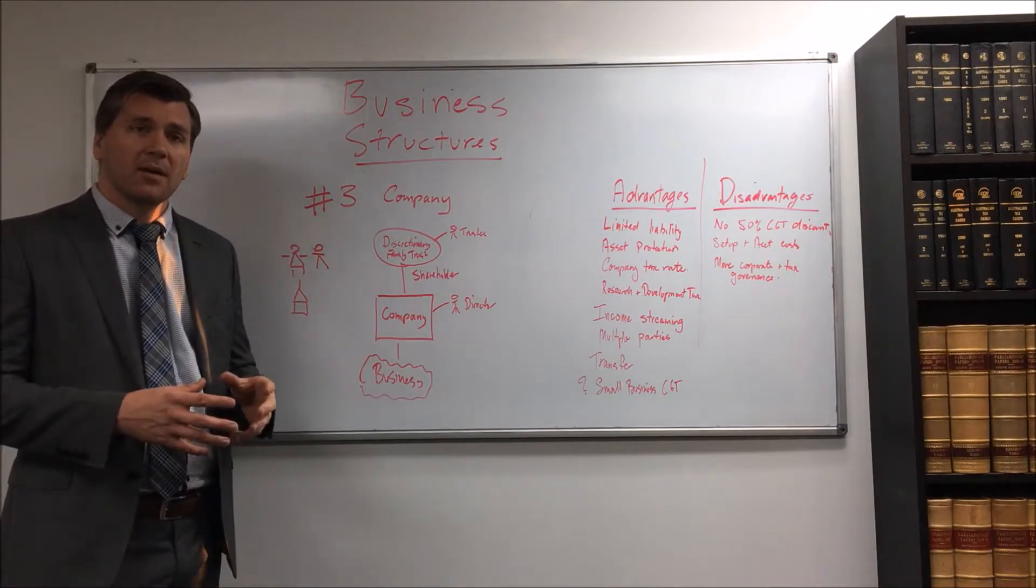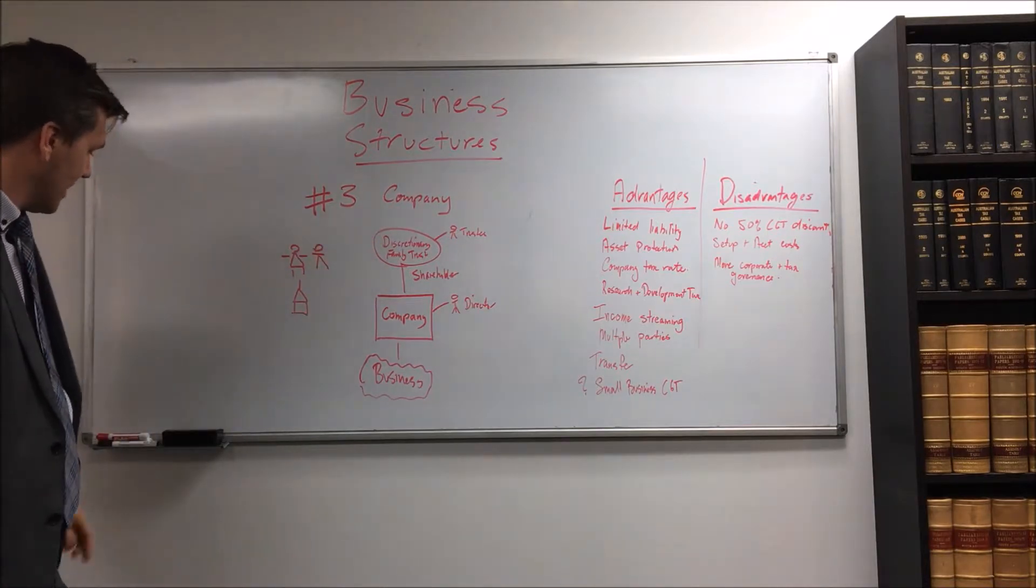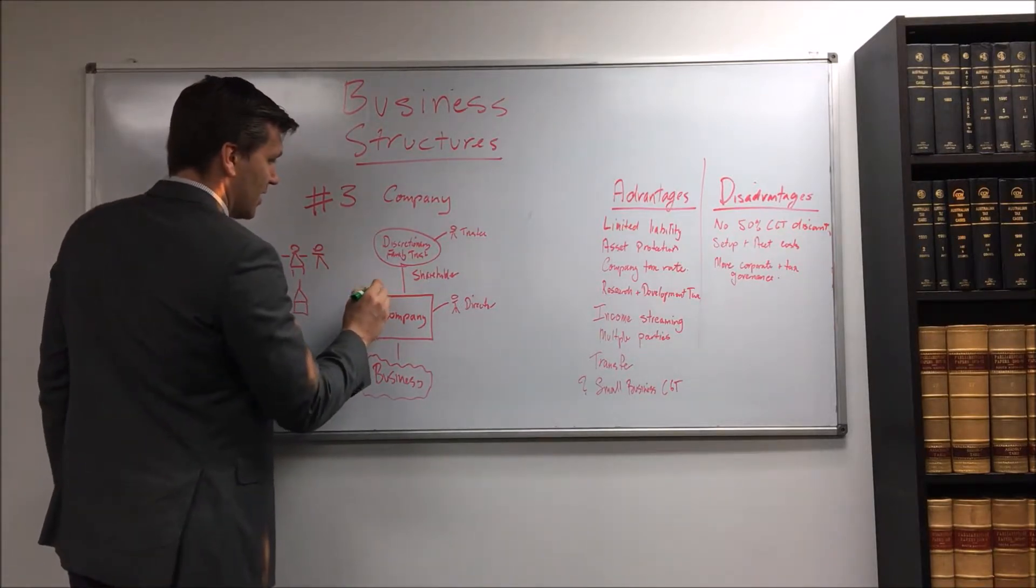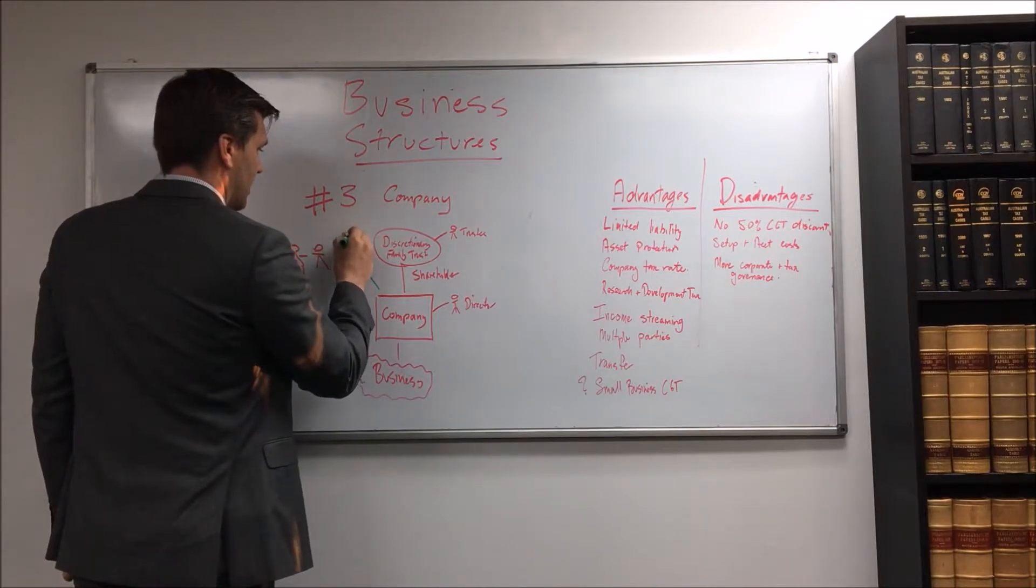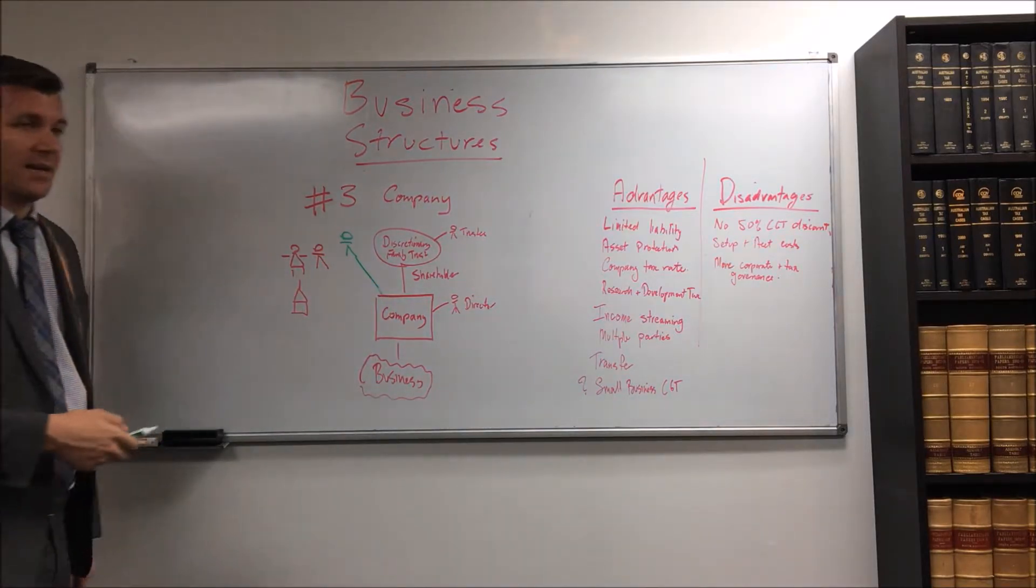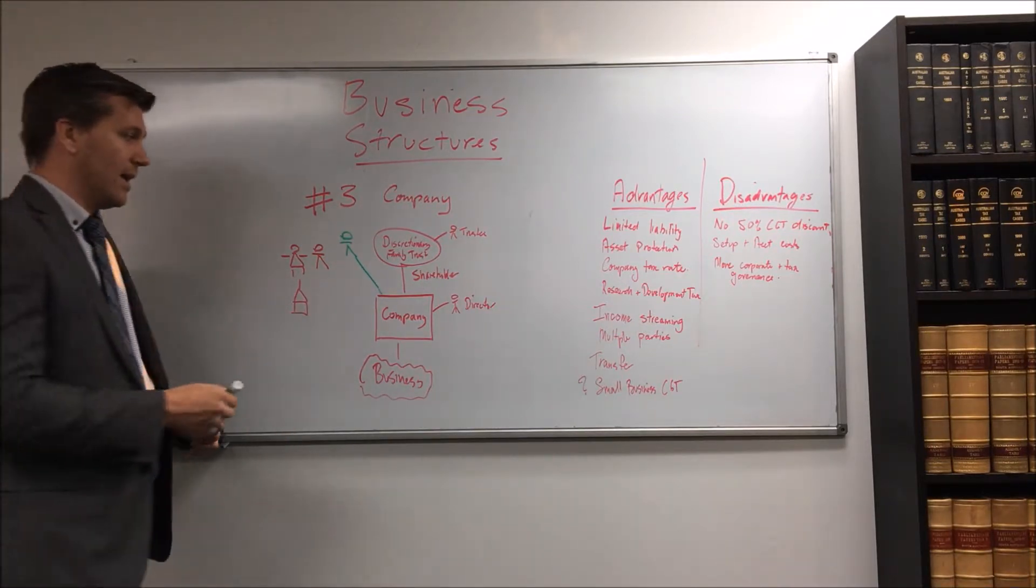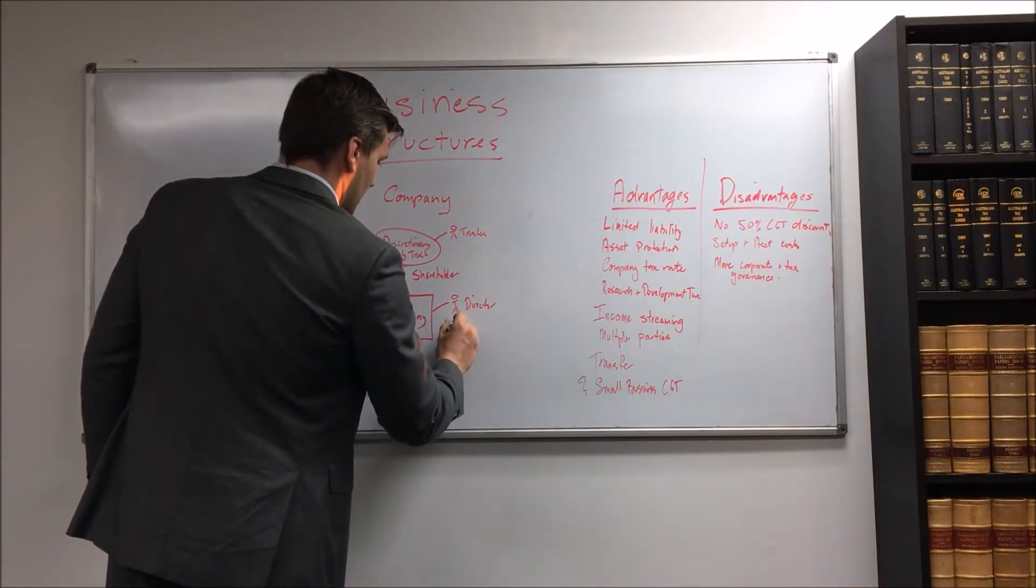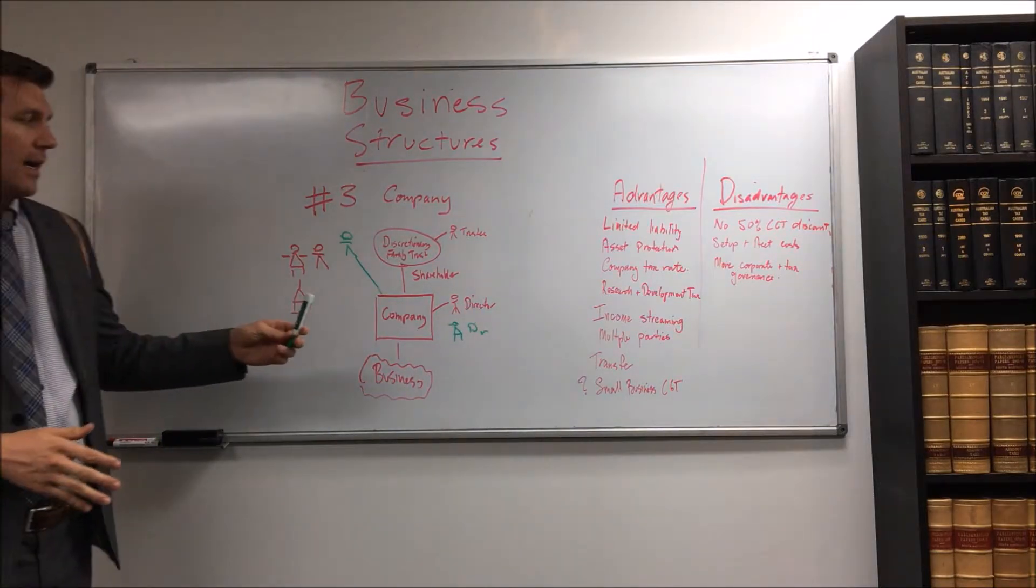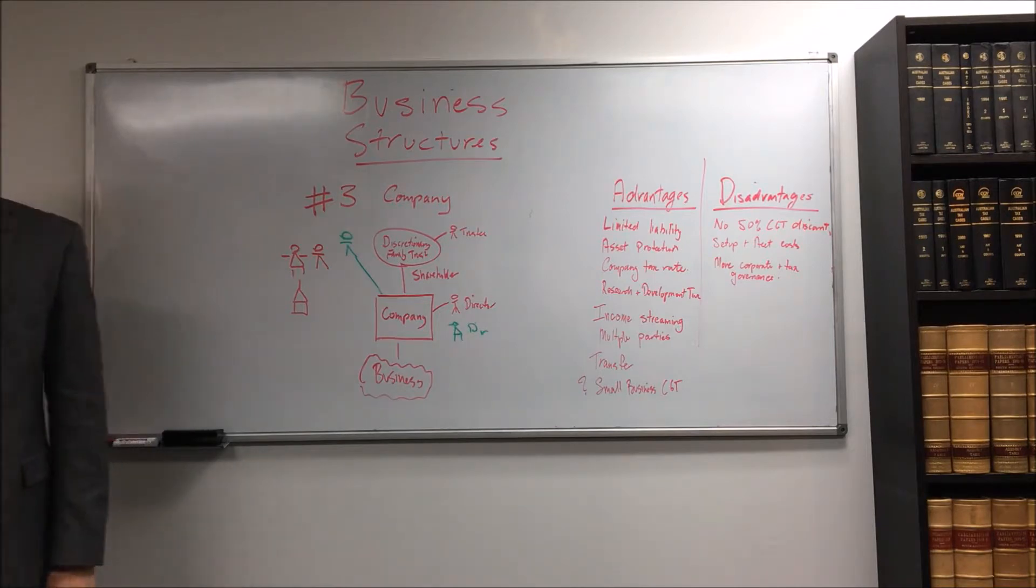Multiple parties. Now here we just have one shareholder, this is owned by a discretionary trust. But if I wanted to add in someone else, so I wanted to sell 50% of my shares to another party, who'd probably own it in a discretionary trust anyway, it's very simple. I can set out different classes of shares, I can set out different rights, it's really clear who owns what. I can add them as a director and so it can be really clear what the governance of this is.